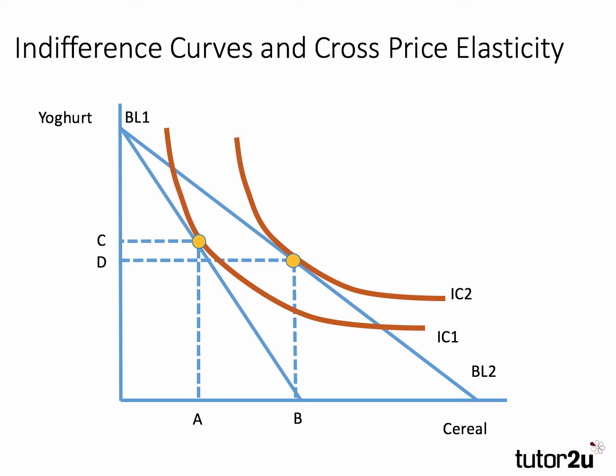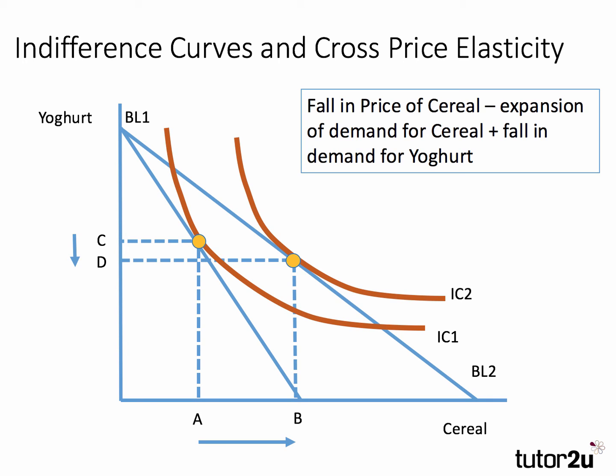So where does cross price elasticity of demand come into this? The fall in the price of cereal has caused consumers to buy more cereal — there's been an expansion of demand — but at the same time they've reallocated their budget and they're buying less yogurt. There's been a substitution effect away from yogurt towards cereal, which is now relatively cheaper. Consumers are buying more cereal and less yogurt — there's a substitution effect at work.